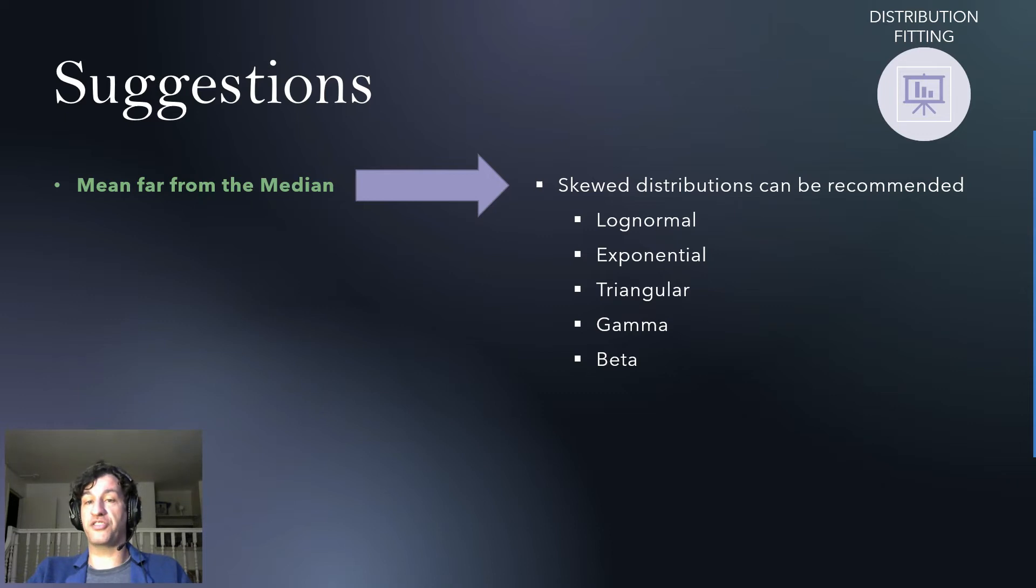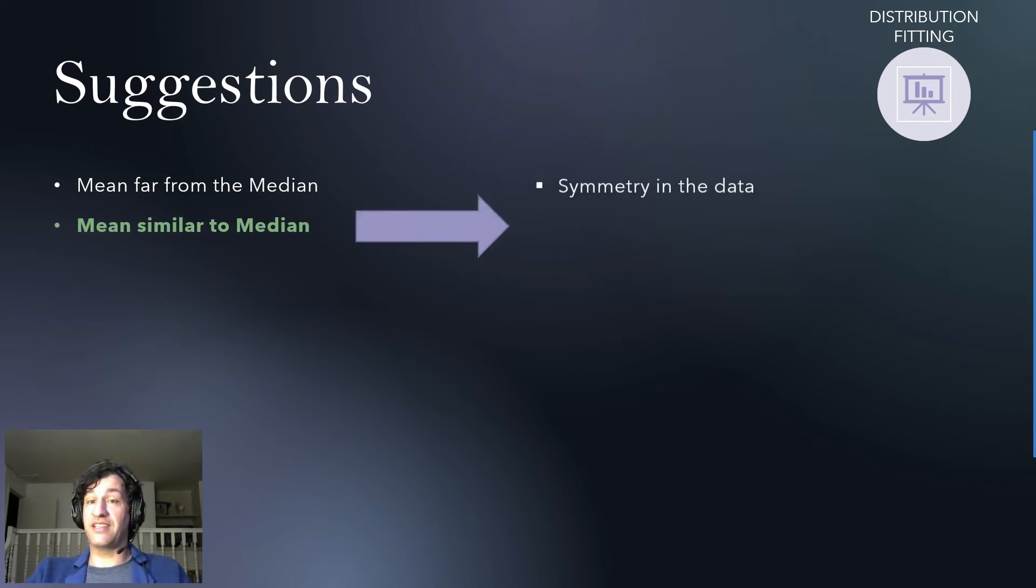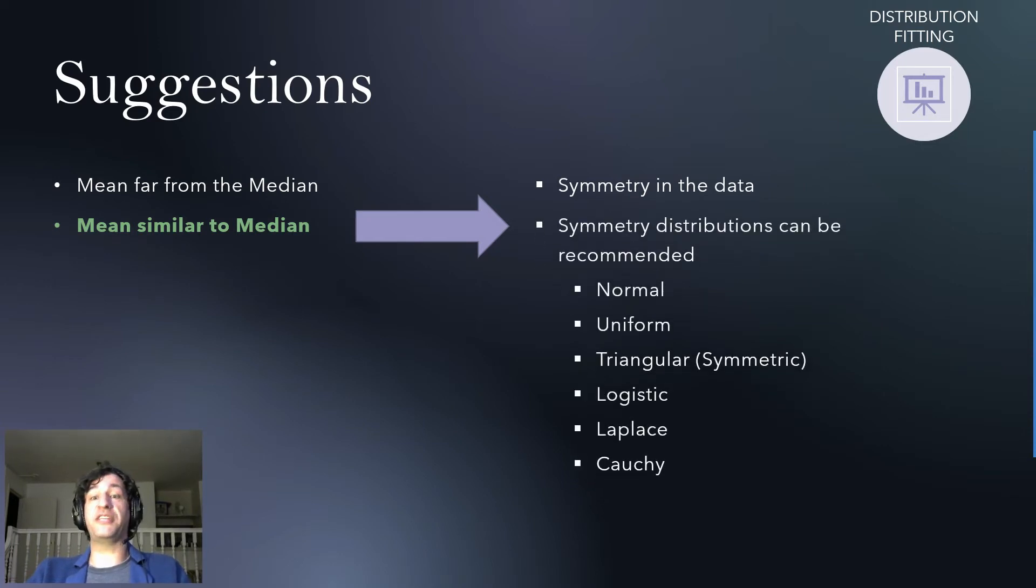For example, log normal, exponential, triangular, etc. On the other hand, if the mean is similar to the median, you might know that the data is symmetrical. So, you might want to use a symmetrical distribution. For example, normal, uniform, triangular, etc. These distributions are some examples and there are many, many, many more.